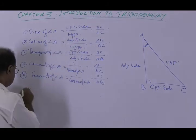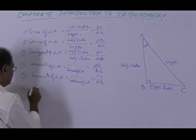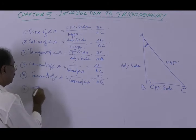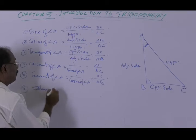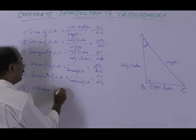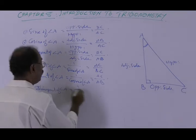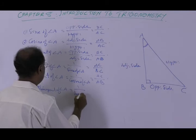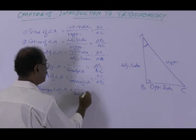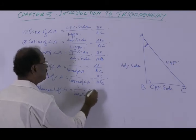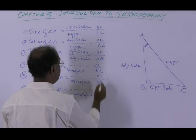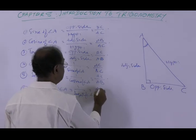The sixth ratio is cotangent of angle A, which is 1 divided by tangent of angle A, which is equal to the adjacent side divided by the opposite side — AB divided by BC.